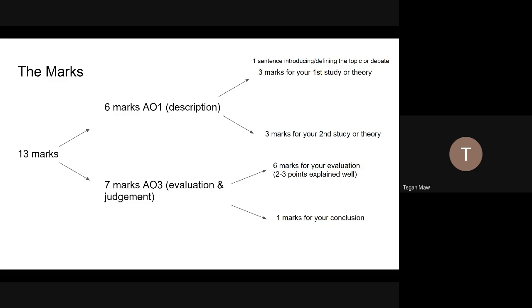Then for your seven marks from AO3, which is your evaluation and judgement, six marks will be for the evaluation, which is two to three evaluation points explained and linked back to the study or theory, and then one mark for your conclusion.